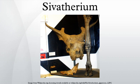Shivatherium resembled the modern Okapi, but was far larger and more heavily built, being about 2.2 meters tall at the shoulder, 3 meters in total height, with a weight up to 500 kg. It had a wide, antler-like pair of ossicones on its head, and a second pair of ossicones above its eyes. Its shoulders were very powerful to support the neck muscles required to lift the heavy skull.